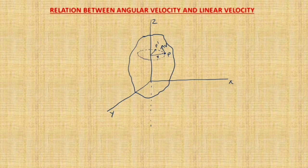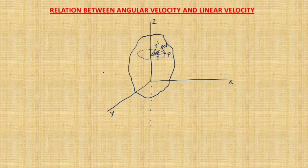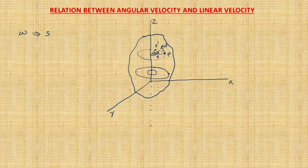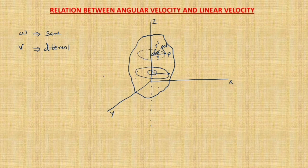The angle traced by the particle from P to P dash is delta theta. Now, for a rigid body rotating about the z-axis, all particles except those on the axis of rotation rotate with the same angular velocity. All these particles possess the same angular velocity, but their linear velocities are different. The angular velocity omega is the same for all particles, whereas the linear velocity differs because the radius r is different for each particle — maybe r1, r2, r3, etc.